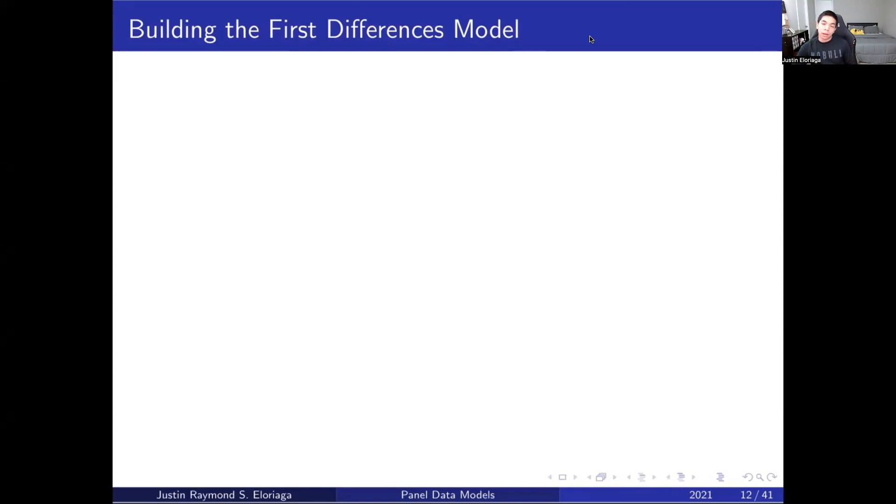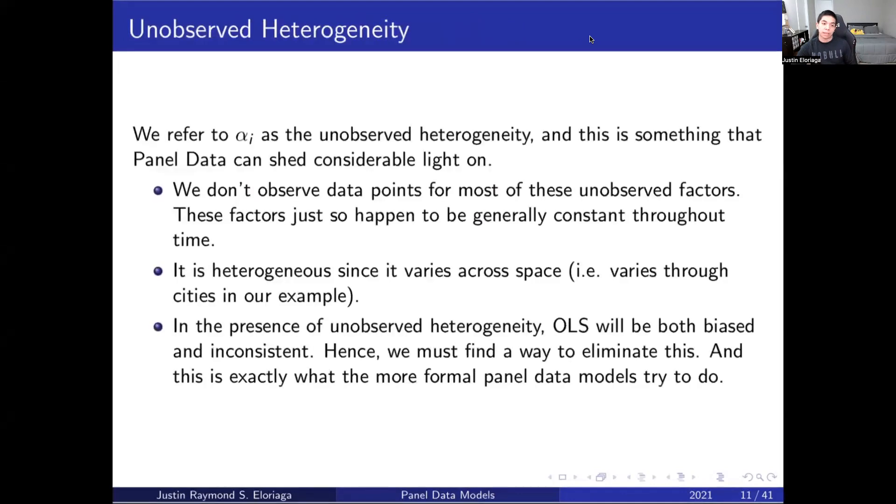As we mentioned in the last video, the main thing we see in panel data is this unobserved heterogeneity term. We can have this space-specific error called alpha_i, and this is something that panel data can shed considerable light on.